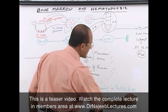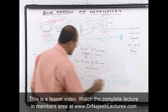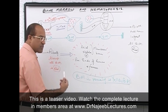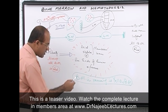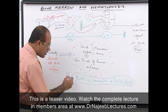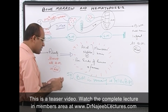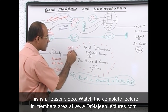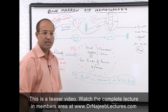Yellow bone marrow means inactive bone marrow. In a person more than 20 years old — an adult — 50% of bone marrow is inactive and yellow, and 50% of bone marrow is active and red.